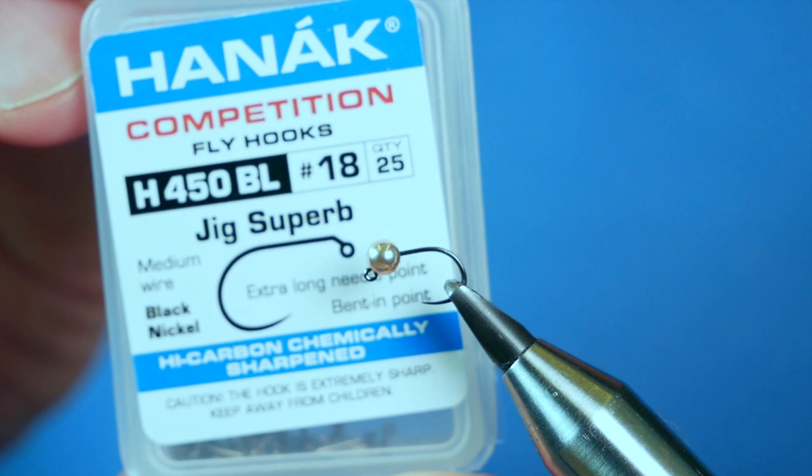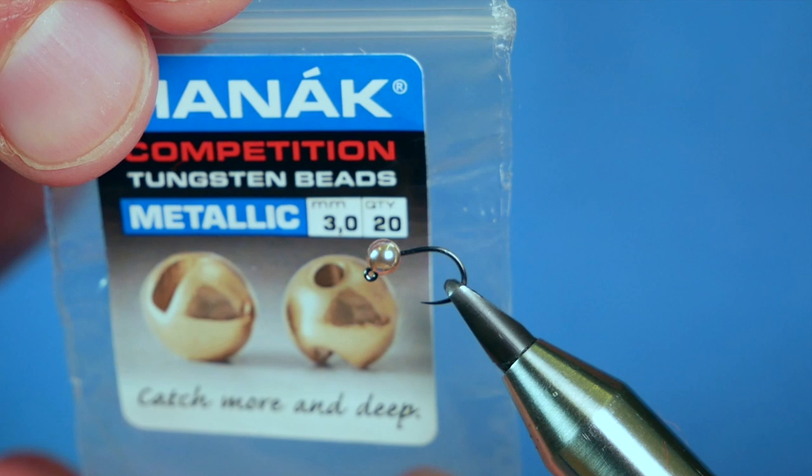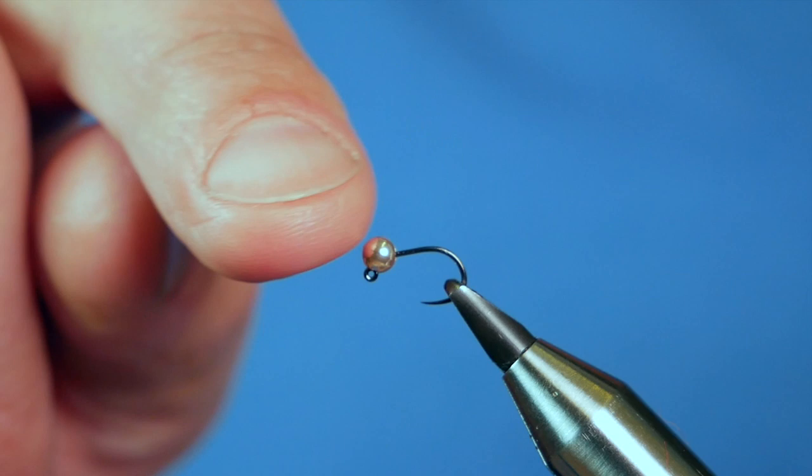In the vise is the long awaited Hanak H450 barbless hook at size 18. This is a black nickel hook with medium wire gauge, and I've coupled that with the Hanak 3mm slotted tungsten bead. It's a small slot so it sits on the size 18 just lovely. The thread I'm going to be using today is the Vivas GSP at 50 denier.